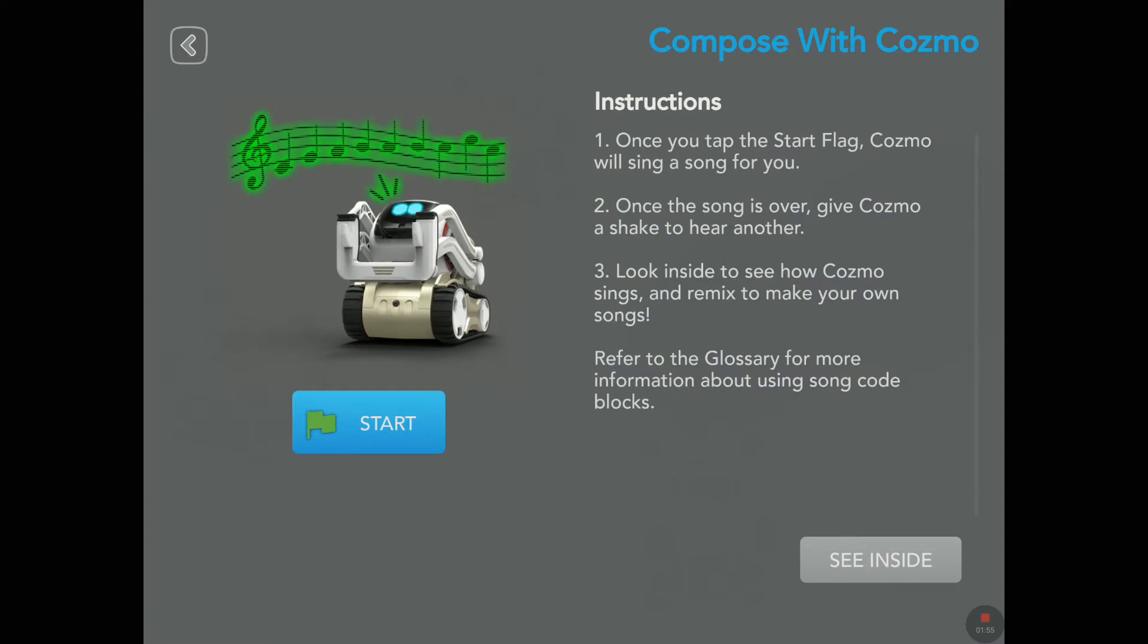And here we have composed with Cosmo. Instructions. Once you tap the start flag, Cosmo will sing a song for you. Okay, so far so good. Once the song is over, give Cosmo a shake to hear another. We have to shake you to sing, Cosmo. You're a special singer.